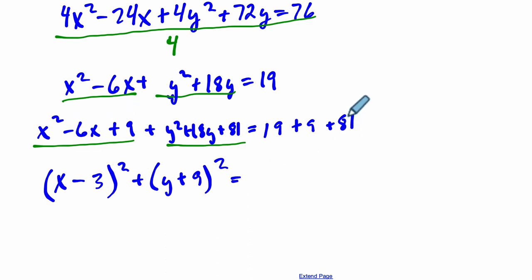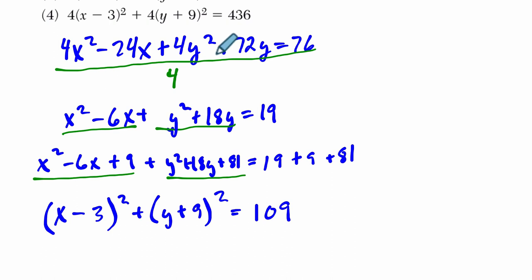And then over here we have 81 plus 9 is 90, plus 19 is 109. And we've got something to work with, yay. But, oh no, we don't see that as any of our choices. Right? There's no 109 here. But if we multiply everything back by 4, what do we get? We get choice 4.